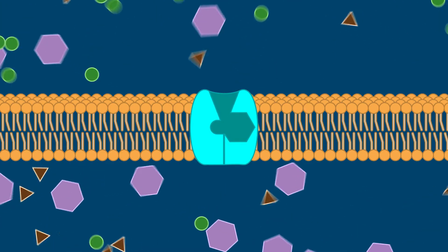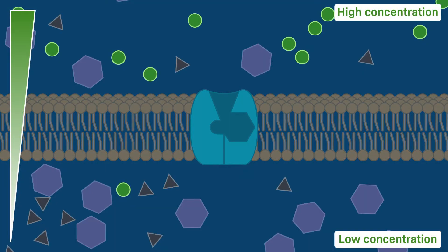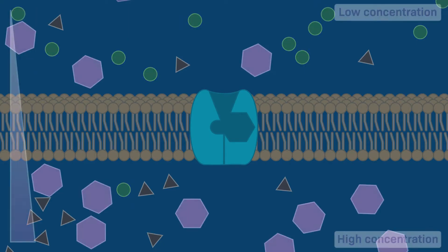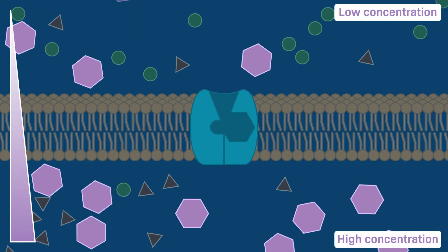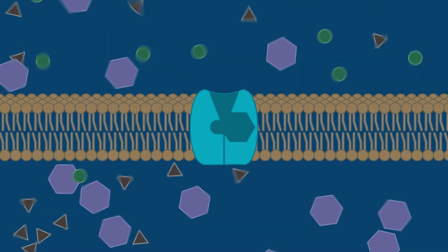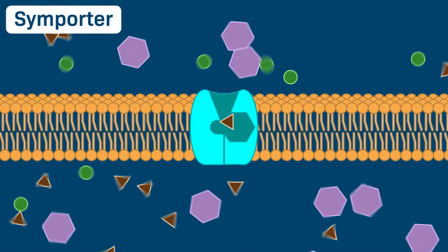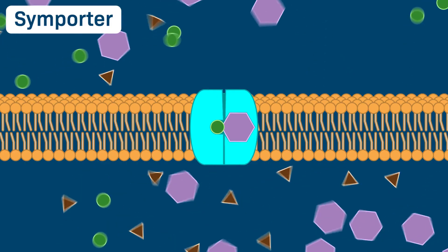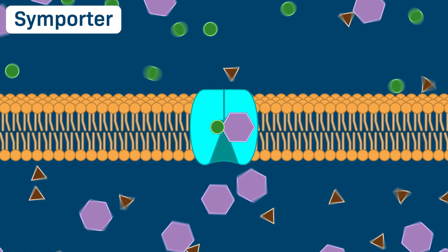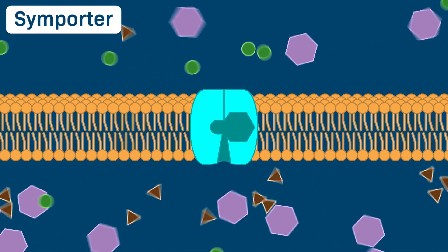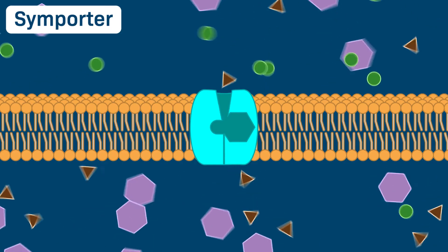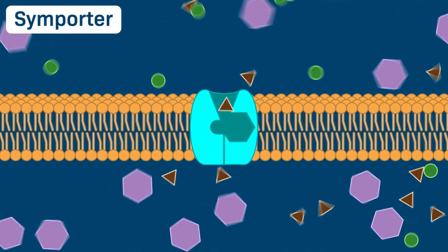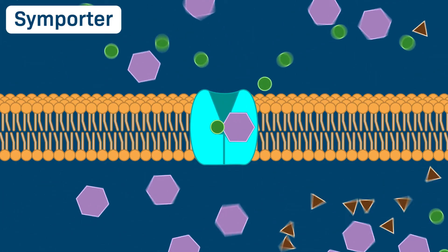Note that there are more of the green circles outside the cell than inside, while there are more of the purple hexagons inside the cell than outside. The movement of the green circle solutes down their concentration gradient releases energy. This symporter uses that energy to pump the purple hexagons against their concentration gradient.